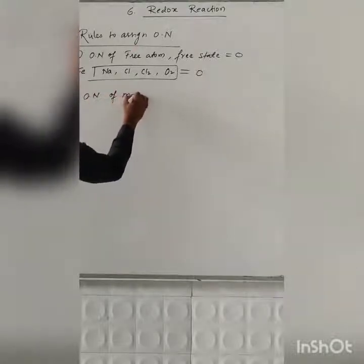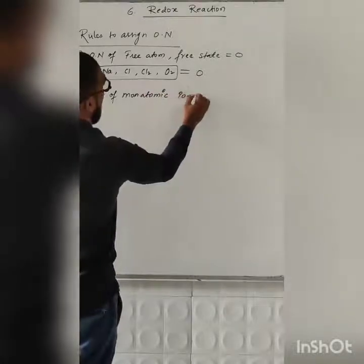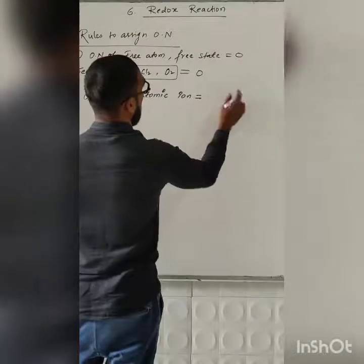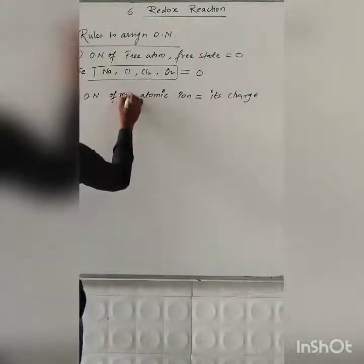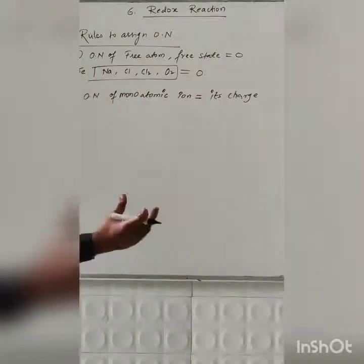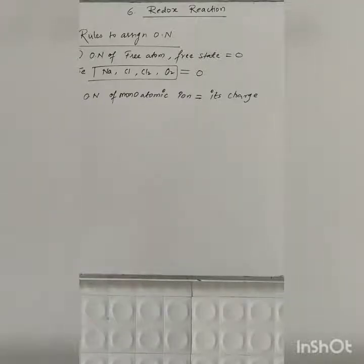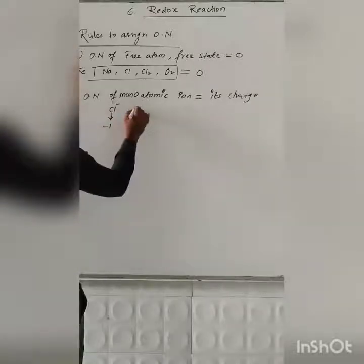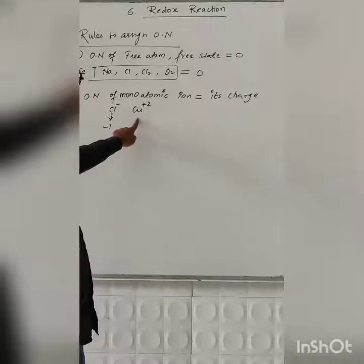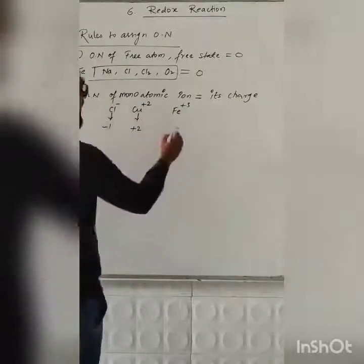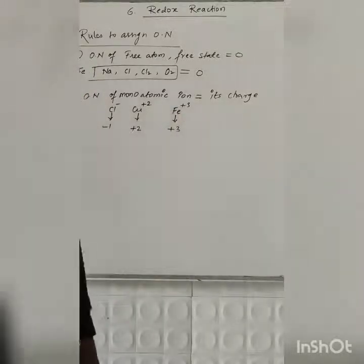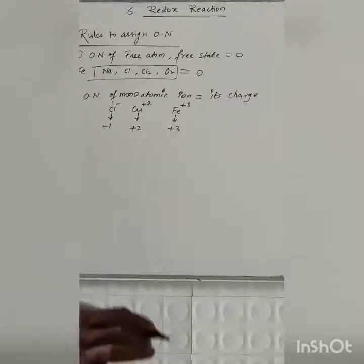Rule 2: the oxidation number of a monoatomic ion is equal to its charge. Mono means one atom, a single atom — the ion will be positive or negative. For example, if I write Cl⁻, this is a monoatomic ion so it has a charge of minus 1. If I write Cu²⁺, this is a monoatomic ion so the charge is plus 2. If I write Al³⁺, this monoatomic ion has a charge of plus 3. So the monoatomic ion oxidation number is always equal to its charge.